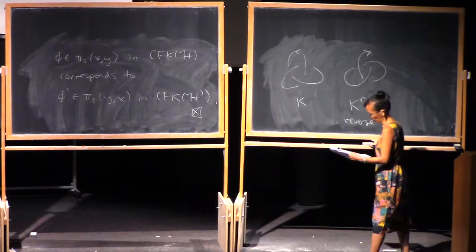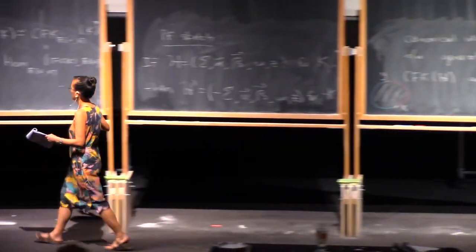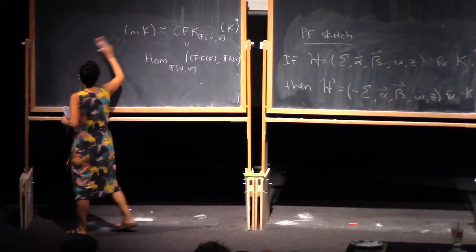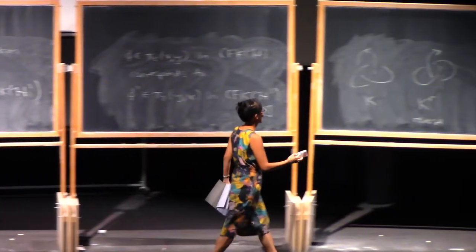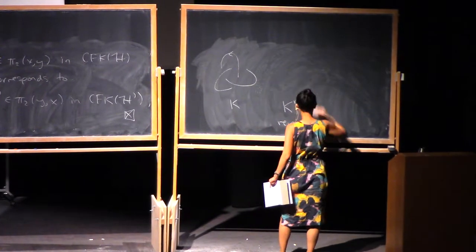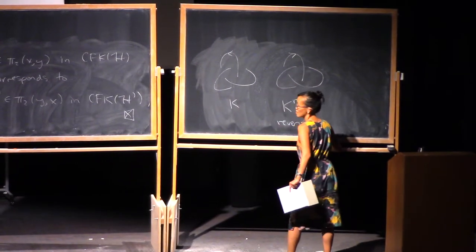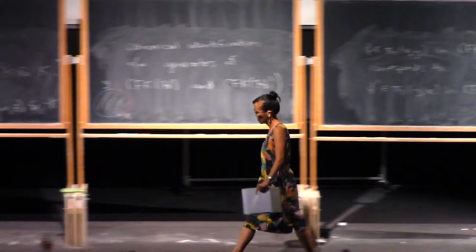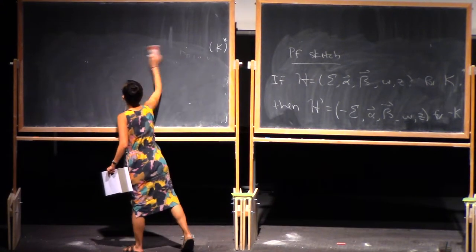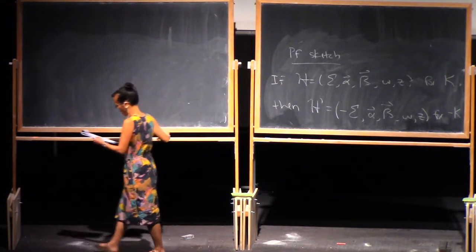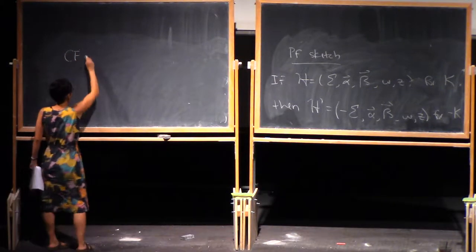In the case of the trefoil, these are actually the same oriented knot. But in general, reversing the string orientation can change your oriented knot. And what does this do to the knot flow complex? It actually does nothing — knot flow homology does not see the string orientation.